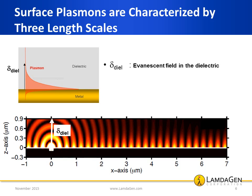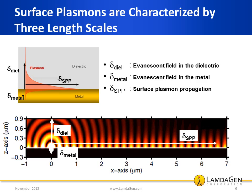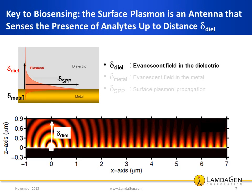First, the evanescent field length in the metal represents how far into the metal the surface plasmon wave reaches. Third, the surface plasmon propagation distance represents how far from the excitation point the surface plasmon can travel along the metal or dielectric interface. We anticipate that for biosensing purposes, the surface plasmon acts as an antenna. It can sense the presence of analytes in solutions — here the dielectric — up to a distance of the evanescent field in the dielectric.